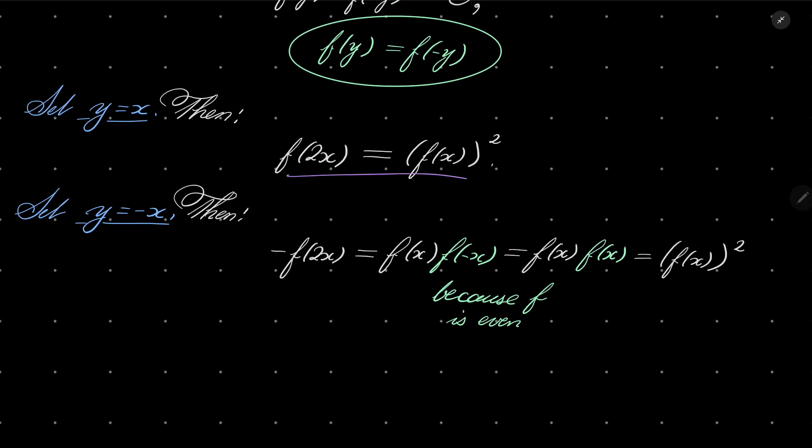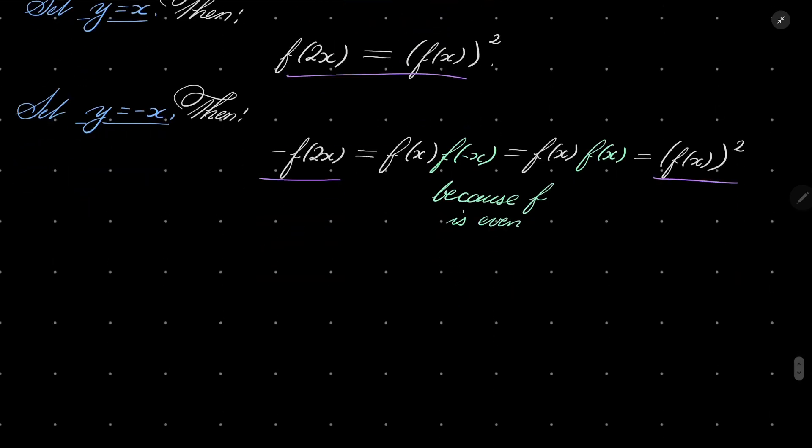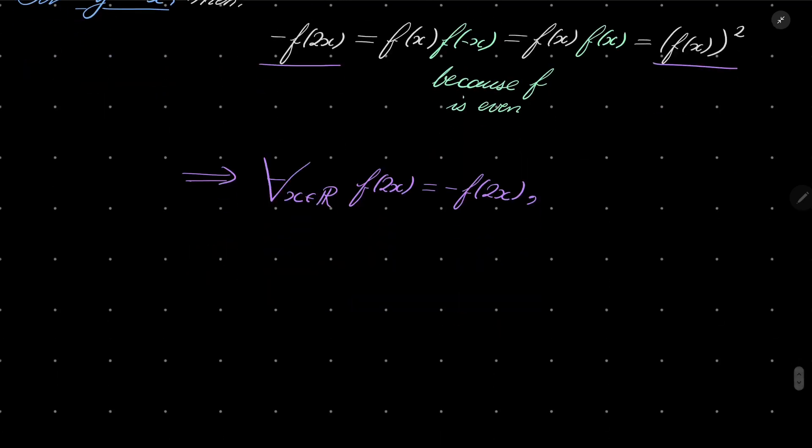Now, let's compare this line with this line. Then, we see that for every real number x, f(2x) equals minus f(2x), which of course means that our function is constantly 0, i.e. f is constantly 0.